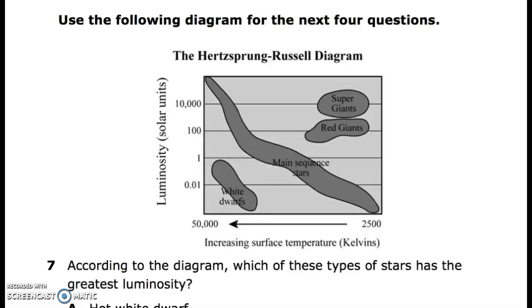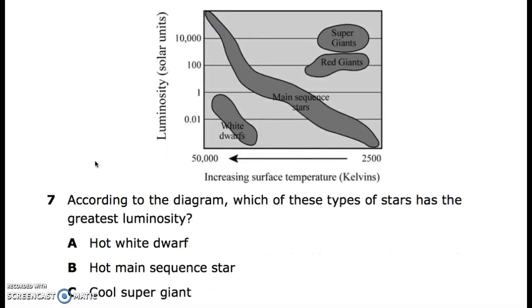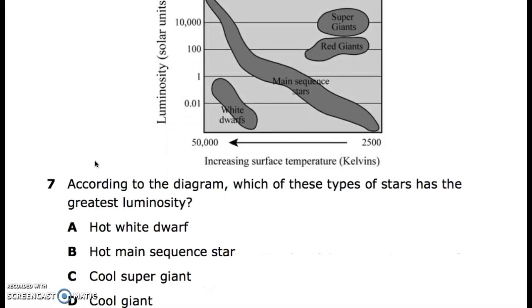Use the following diagram for the next four questions. The Hertzsprung-Russell diagram. You have luminosity in solar units, and you have increasing surface temperature in kelvins. So remember, it's cooler here, hotter here, brighter here, not as bright down here. According to the diagram, which of these types of stars has the greatest luminosity? The greatest luminosity is going to be up here. A. hot white dwarf, B. hot main sequence star, C. super cool giant, D. cool giant.